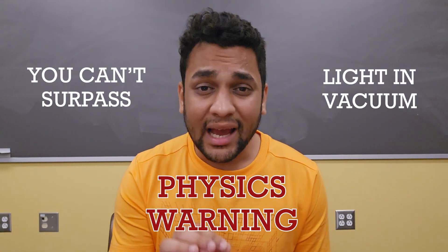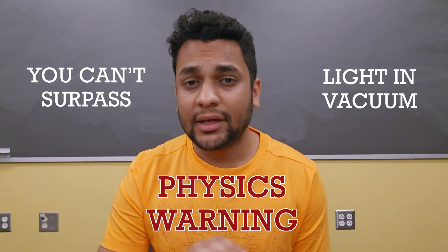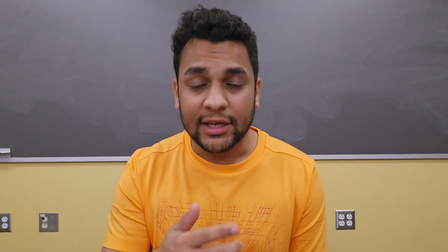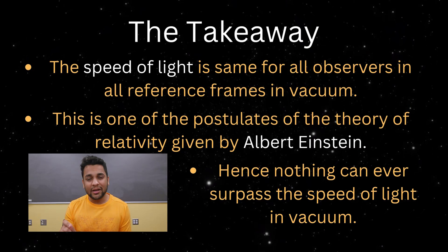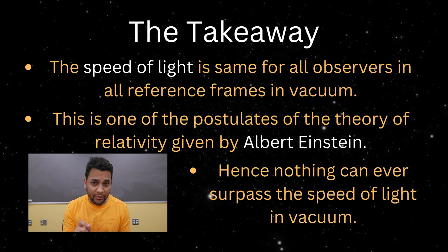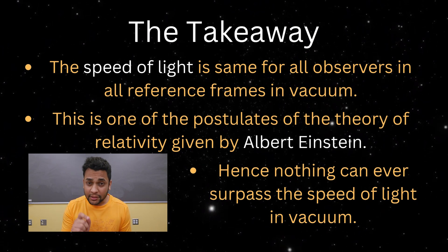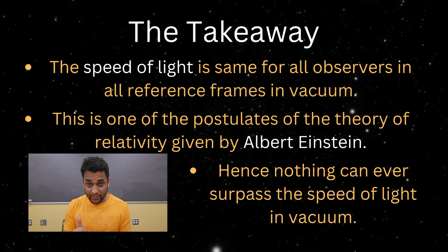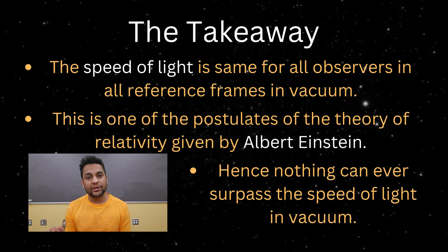This is because light has the same speed in all reference frames. Even if you travel in a faster rocket, light will still have the same speed in your reference frame, and hence you will never be able to surpass it. The speed of light is a fundamental constant that profoundly influences our comprehension of space-time, and it imposes constraints on the speed at which matter and information can travel through the universe.